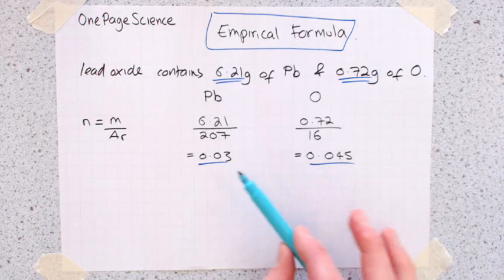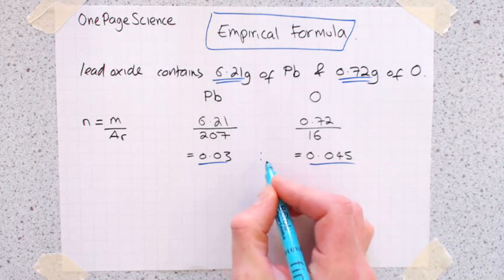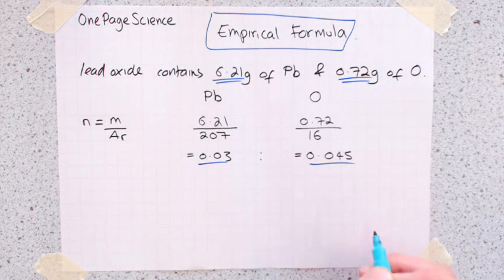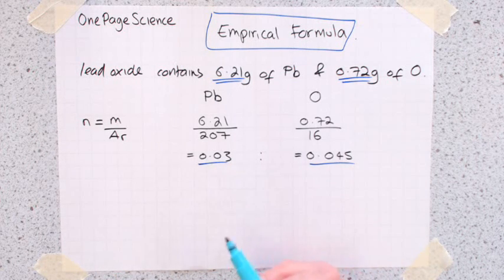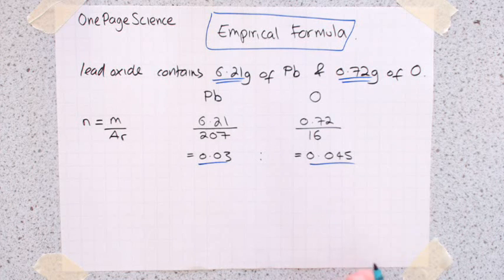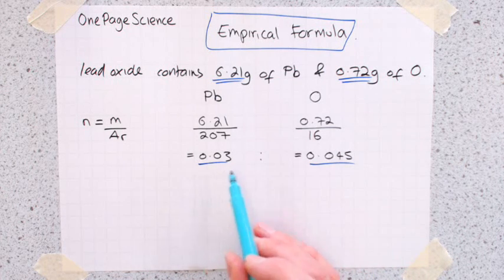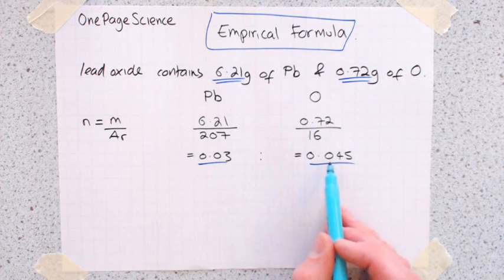So there's lots of tricks you can do here with maths. At the moment, we've worked out that it's a 0.03 to 0.045 ratio. There's all sorts of things you can do. You can times by 100 and try and look for multiples. It depends on your math skill. My preferred method that works for all examples, is at this stage, you divide by whichever one of these values is the smallest. And do the same to both sides.